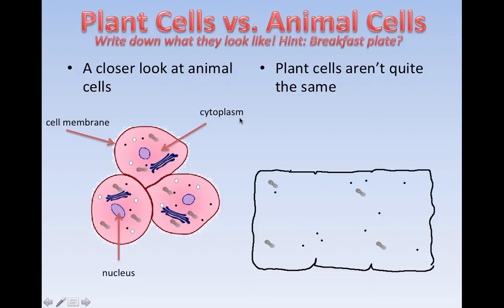Plasm kind of sounds like jelly. Cyto is a fancy way to say cell. Right in the middle is something called the nucleus — we'll talk a lot about the nucleus later — but for now, all the genetic information, the DNA, is actually stored inside the nucleus.